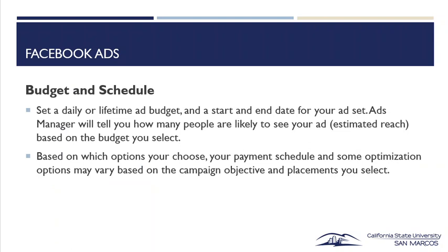Budget and scheduling. You'll want to set a daily or lifetime ad budget and a start and end date for your ad sets. I always recommend nothing less than four days. Ads Manager will tell you how many people are likely to see your ad — an estimated reach based on the budget you select. The more money you spend, the more people it's going to reach, so always have a minimum of four days. Payment schedule and optimization options may vary based on the campaign objective and placements you select.